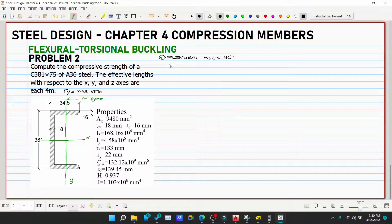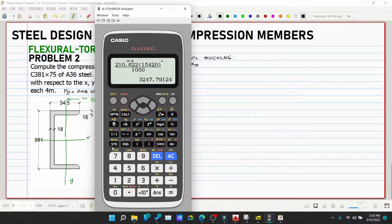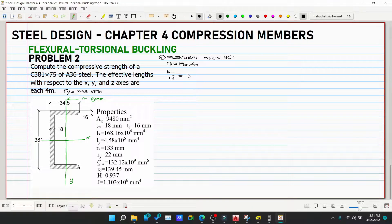Pn is equivalent to Fcr multiplied by Ag. So KL over ry: 4 meters times 10³ over ry which is 22. This gives us 181.82.